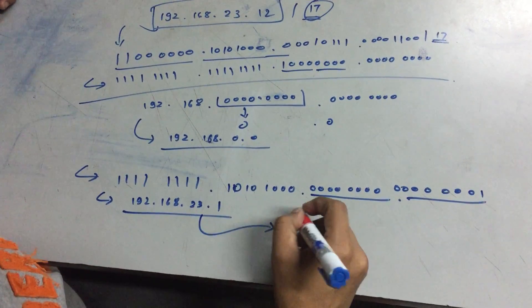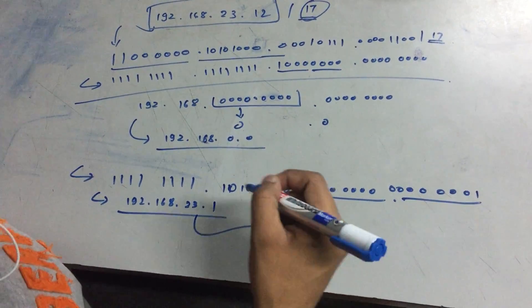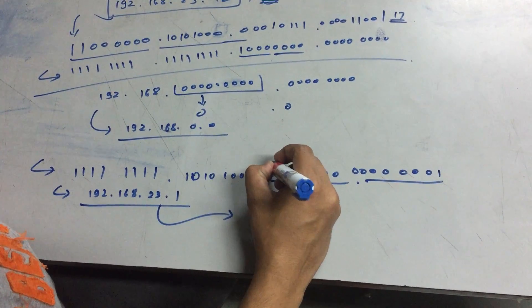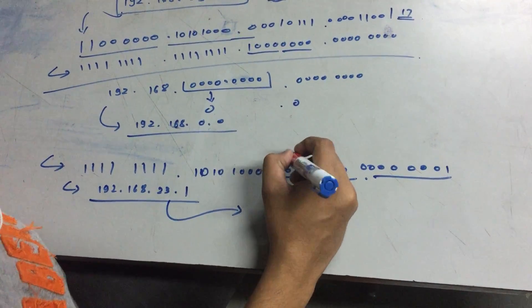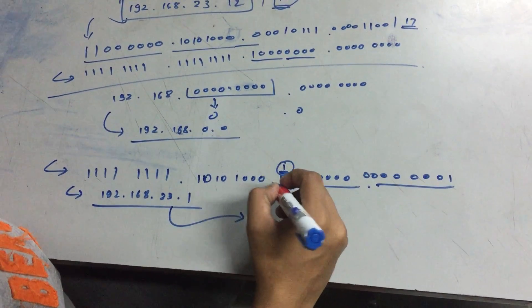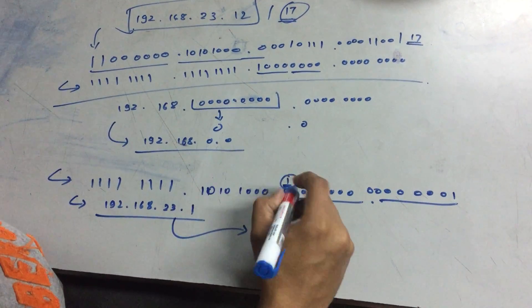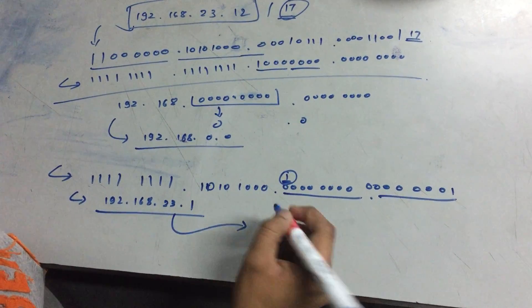This question can be more interesting if this bit is 1. So the next problem you can do is keeping this bit 1 and find the first IP address of this network. Thank you.